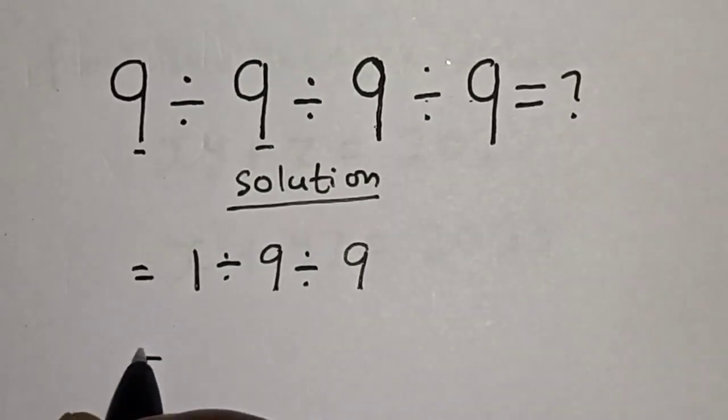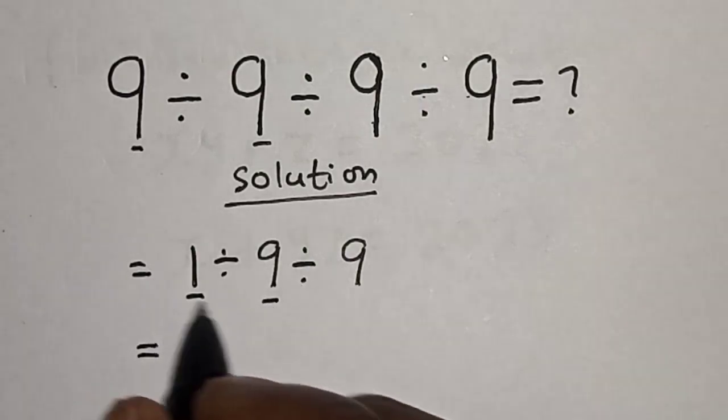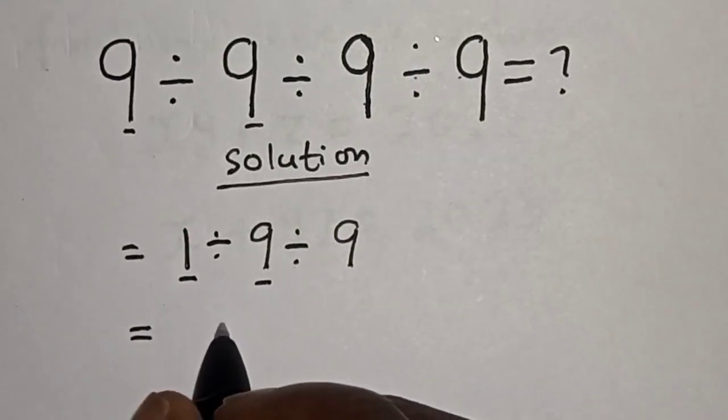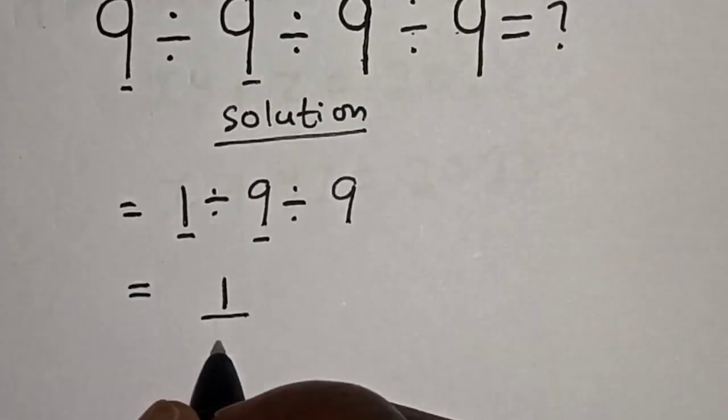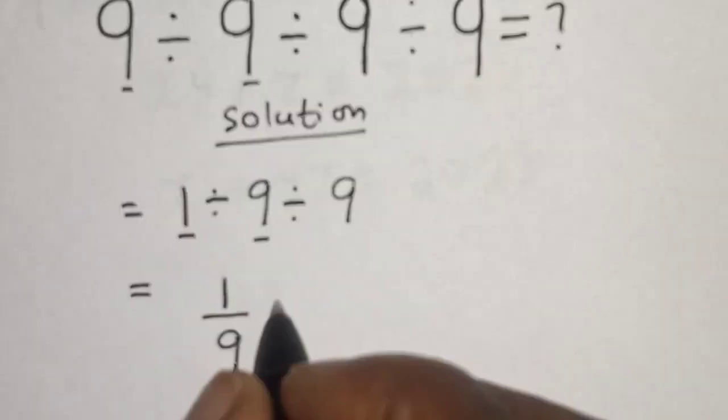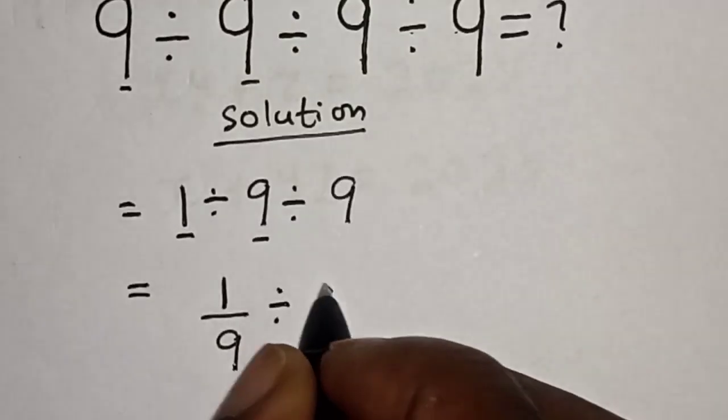Then, this is equal to, let's work with these first two again. 1 divided by 9, this is 1 over 9. Then, we have this divided by 9.